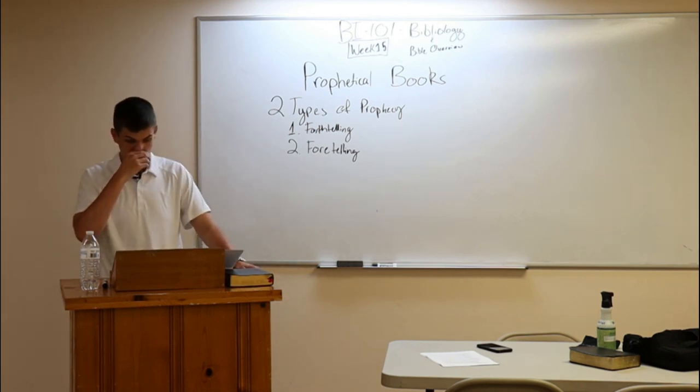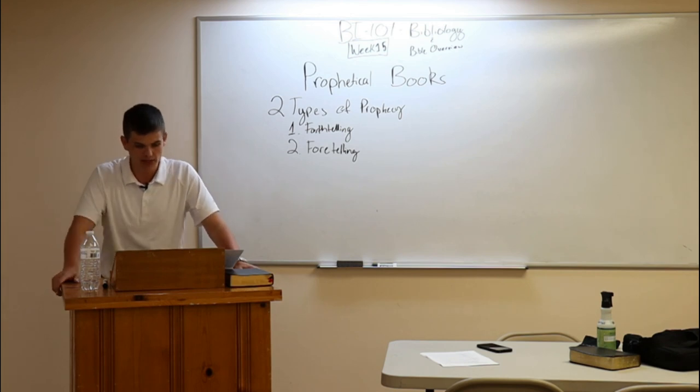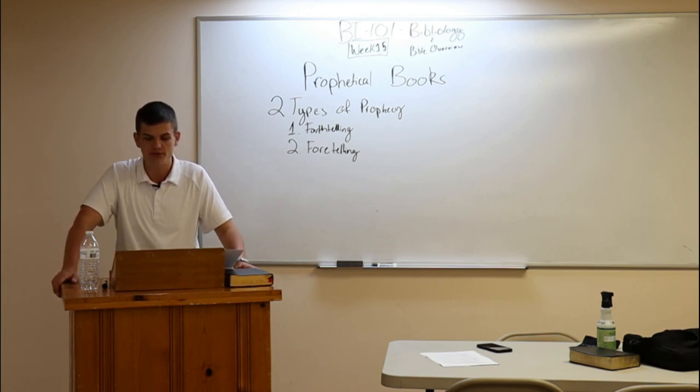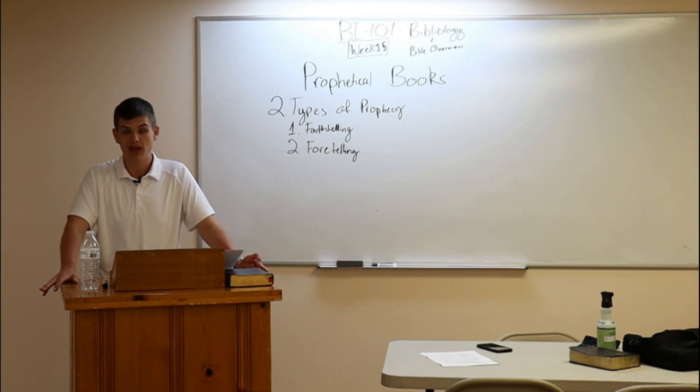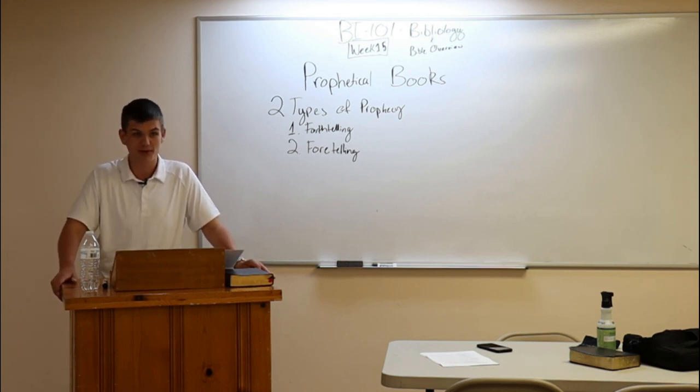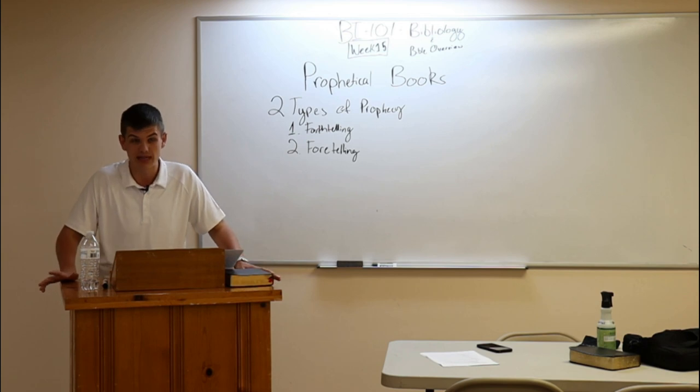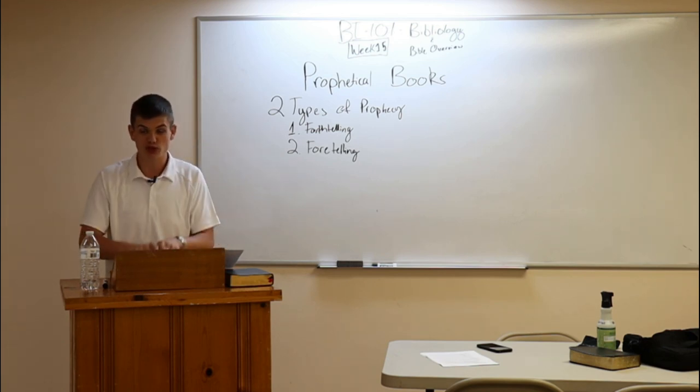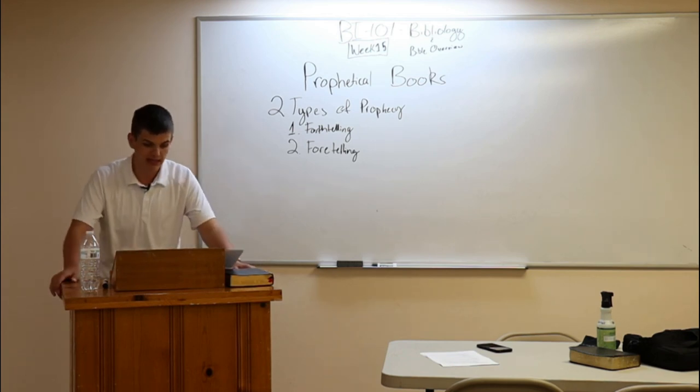Those are the major prophets, and now we'll take a quick swing at the minor prophets. We have first Hosea. Hosea ministered from 755 to 715 B.C., and Hosea demonstrates the faithfulness and steadfast love of God towards His covenant people. Hosea, as you know, married a harlot, married an unfaithful woman, and time and time again God said, go back to her, receive her again, be restored. And that pictures the spiritual adultery that you and I commit against God. Every time we sin, we are being unfaithful to God.